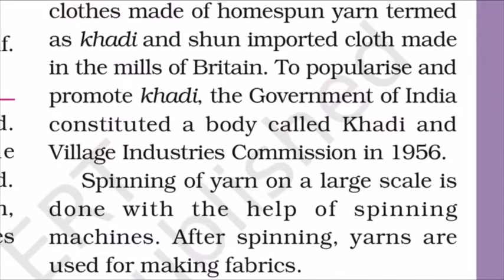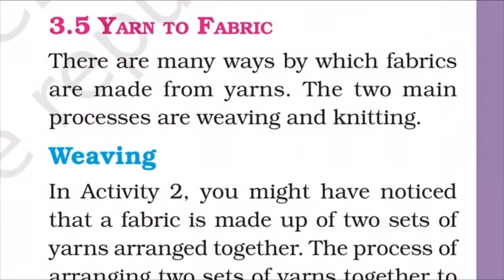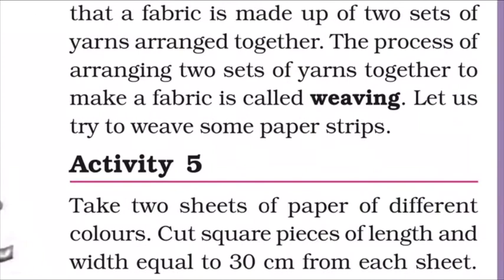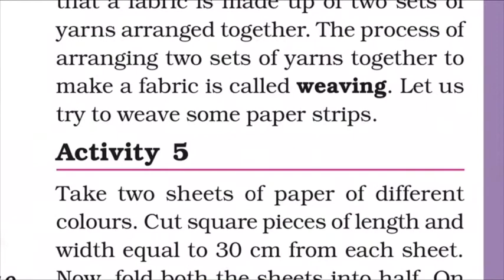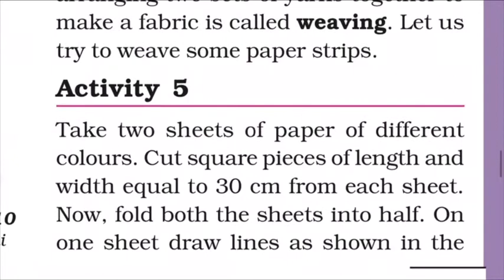After spinning, yarns are used for making fabrics. There are many ways by which fabrics are made from yarns. The two main processes are weaving and knitting. In Activity Two, you might have noticed that a fabric is made up of two sets of yarns arranged together. The process of arranging two sets of yarns together to make a fabric is called weaving. Knitting uses only a single yarn to make fabric. Let us try to weave some paper strips — Activity Five.